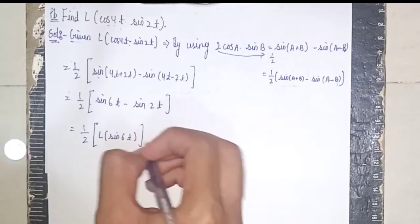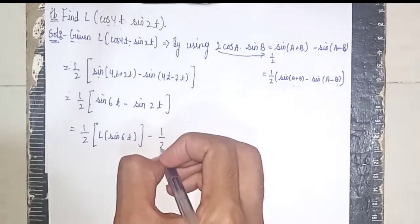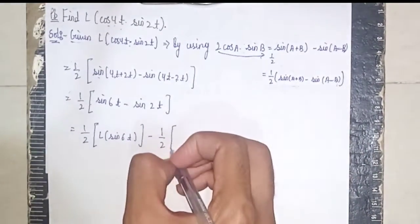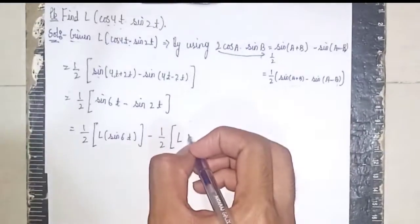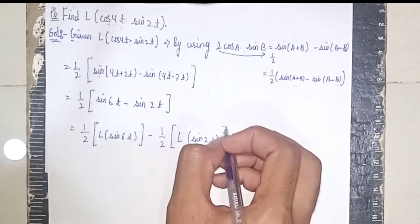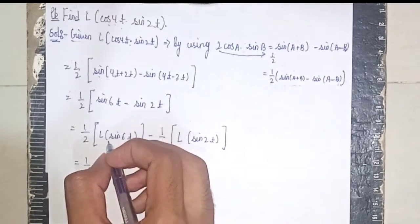Then minus 1 by 2 open the bracket Laplace of sin 2t, close the bracket.